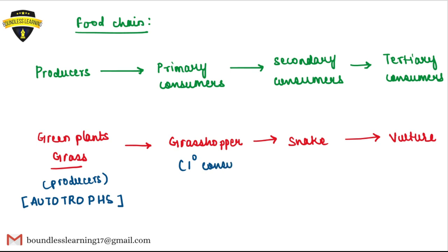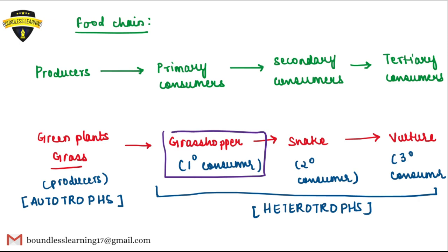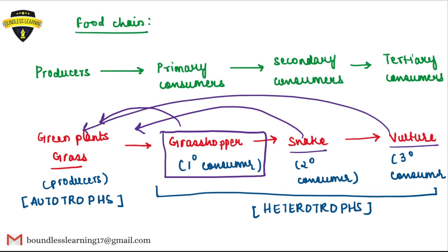In this food chain, the grasshopper is the primary consumer — directly dependent on grass, so it is clearly a heterotroph. The snake is the secondary consumer, and the vulture or eagle is the tertiary consumer. Although the snake and vulture feed on other animals, they are still heterotrophs because they depend directly or indirectly on autotrophs for food. This is why all organisms that do not produce their own food are called heterotrophs.